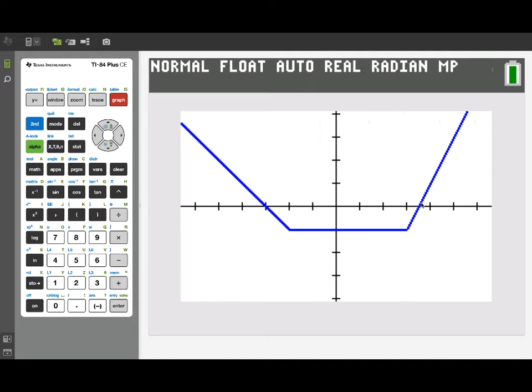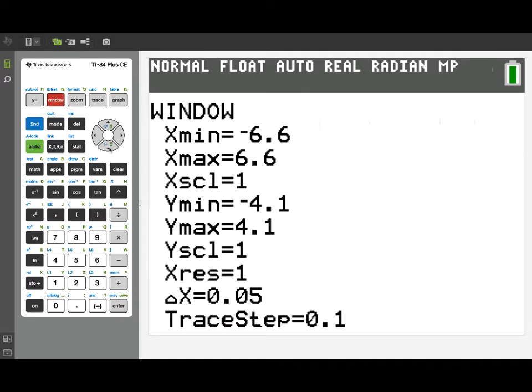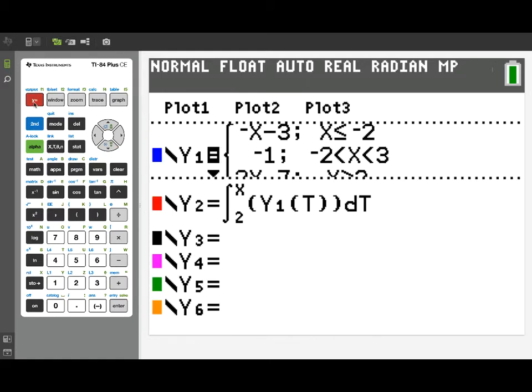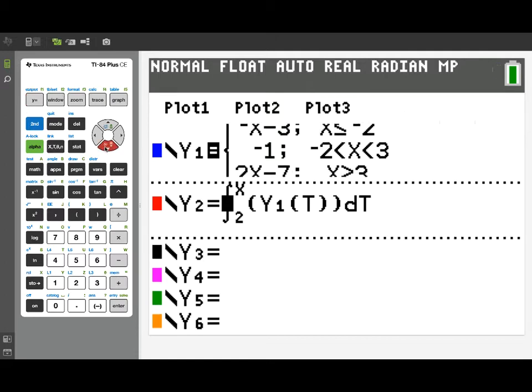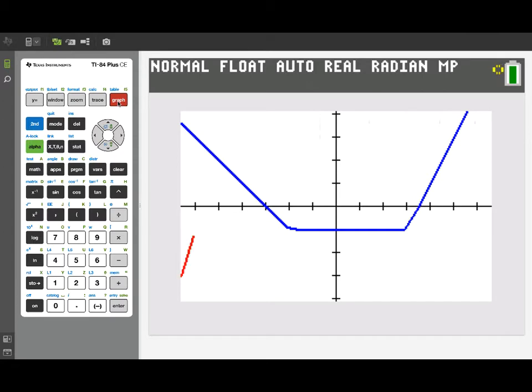Because we've actually defined this as a piecewise linear, we can graph the antiderivative. I'm going to go back to the window menu and set the xres to 5. And I'm going to change the lower limit of integration on our definite integral function to 1.